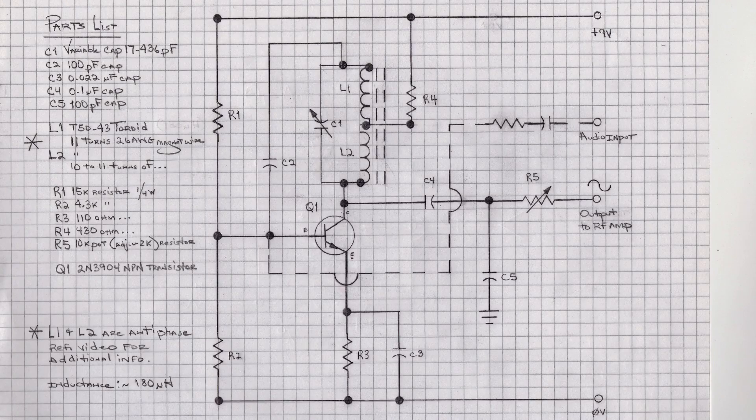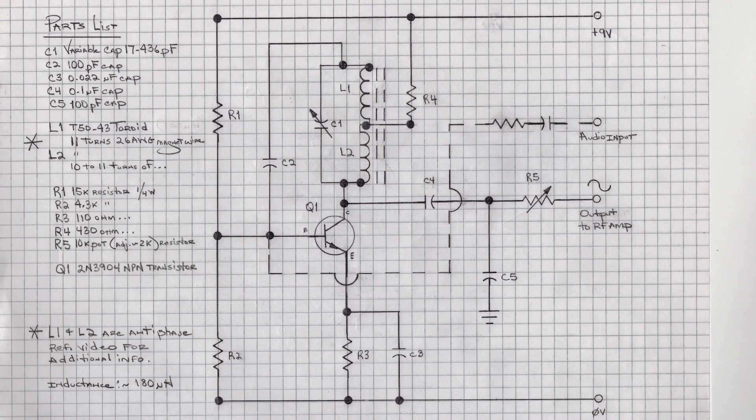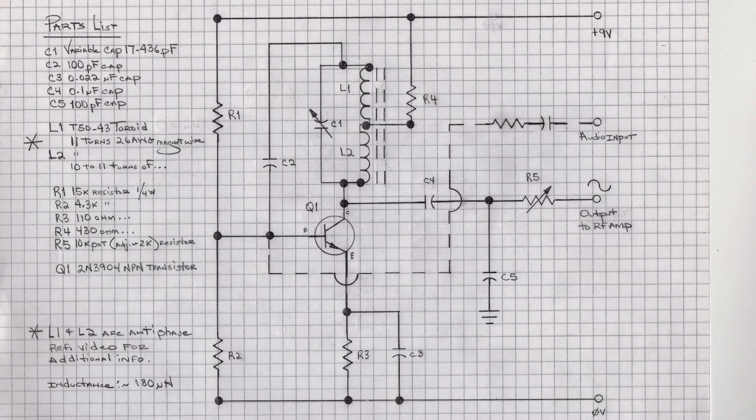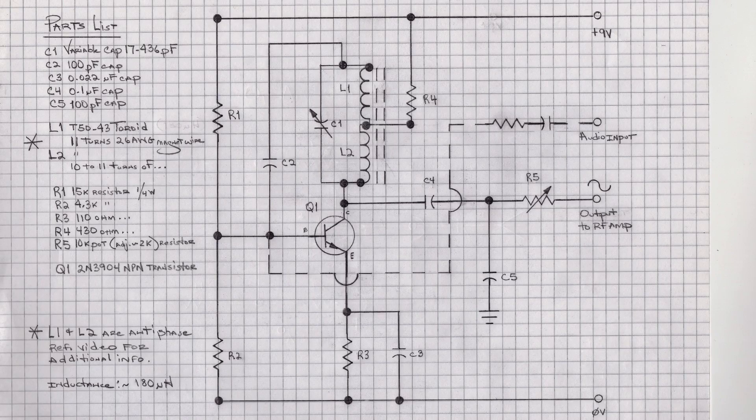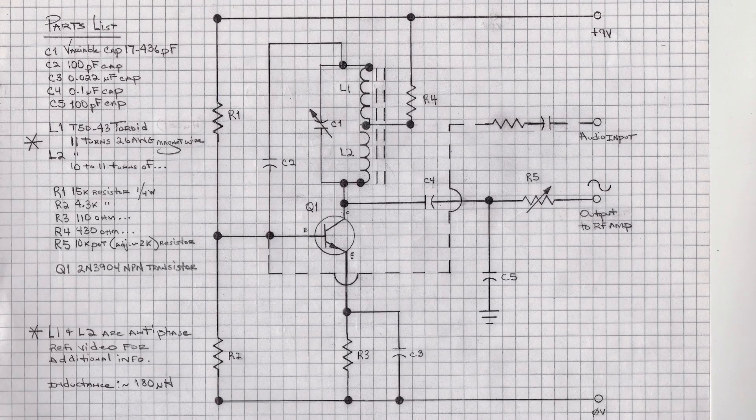As you can see, I'm leveraging Q1, a 2N3904, just a simple, easy to find transistor. And you'll find that to be the case as well as we move along to the RF amp as well as the audio amplifier itself.